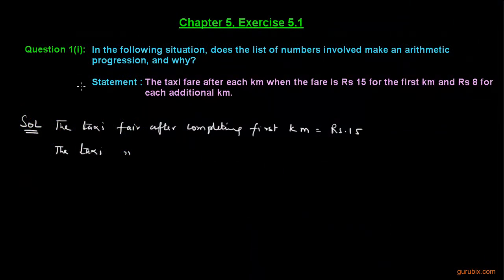Here is the first part of question 1 of exercise 5.1 of chapter 5. This question asks, in the following situation, does the list of numbers involved make an arithmetic progression and why? The statement of the first question is, the taxi fare after each kilometer when the fare is Rs.15 for the first kilometer and Rs.8 for each additional kilometer.